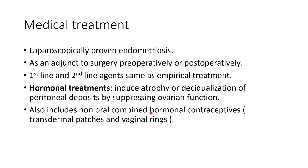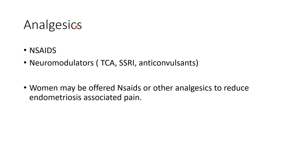Hormonal treatment also includes non-oral combined hormonal contraceptives - transdermal patches and vaginal rings. Neuromodulators and antidepressants work for pain by inhibiting the pre-synaptic re-uptake of serotonin and noradrenaline, which causes pain, and they also increase the level of neurotransmitters in the spinal cord, reducing pain sensitization. This is the recommendation: women may be offered NSAIDs or other analgesics to reduce endometriosis-associated pain.